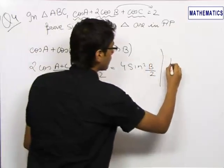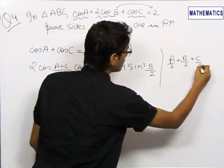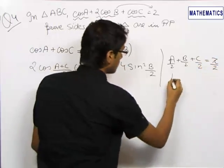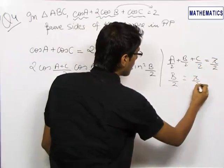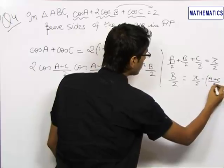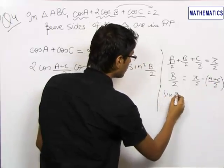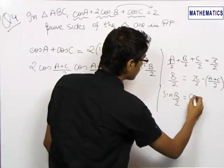We know that A/2 + B/2 + C/2 = π/2 in a triangle. Therefore, B/2 = π/2 - (A+C)/2, and sin(B/2) = sin(π/2 - θ) = cos θ, which equals cos((A+C)/2).